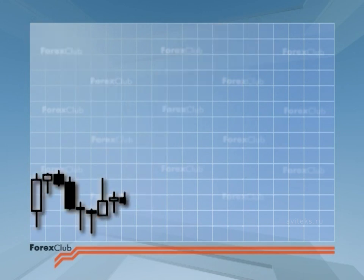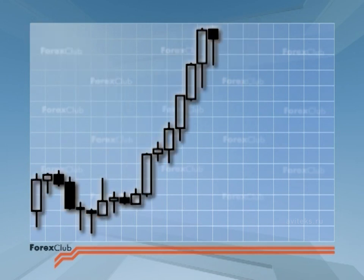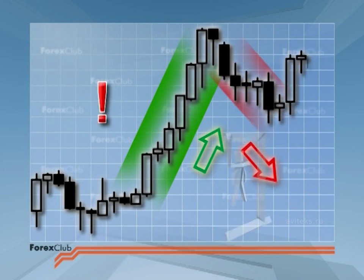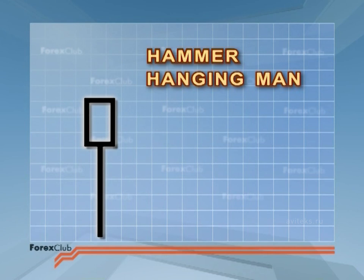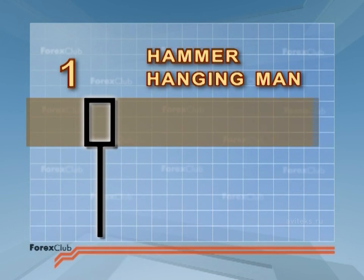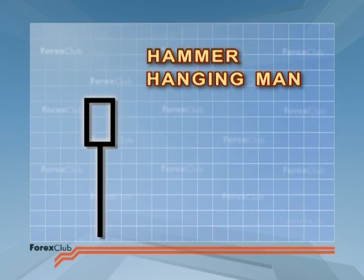A similar candle on an uptrend signals the end of that trend, and once again, a reversal signal for an uptrend has a sinister name. It's called the hanging man, and indeed it promises anything but good for the life of said trend. The hammer and the hanging man have three identifying features. One, the body is in the upper third of the price range. Two, the lower shadow is twice the length of the body. And three, the candle doesn't have an upper shadow, or the shadow is very short.